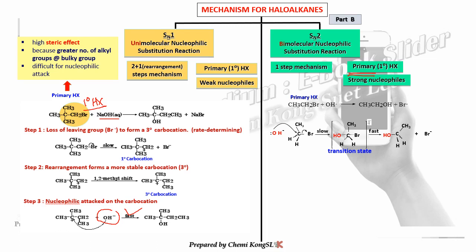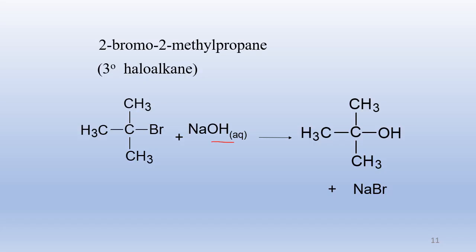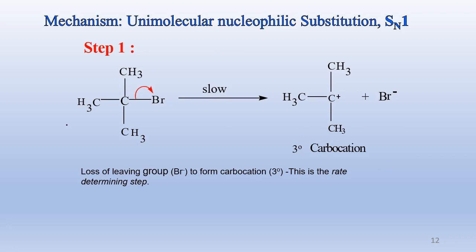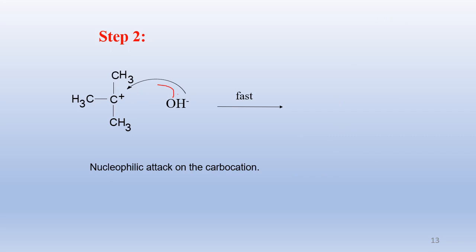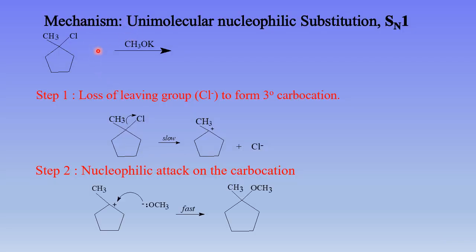Now showing further SN1 examples. With a strong nucleophile: step one is the slow step — bond breaking, forming the tertiary carbocation (must label it). Step two — nucleophilic attack (fast step) — forms the product. With CH3OK (methoxide, strong nucleophile): step one, slow step, forms the tertiary carbocation (label it — no rearrangement since it's already tertiary). Step two — nucleophilic attack — the CH3O⁻ attacks the carbocation to form an ether. Remember: slow for step one, fast for step two.